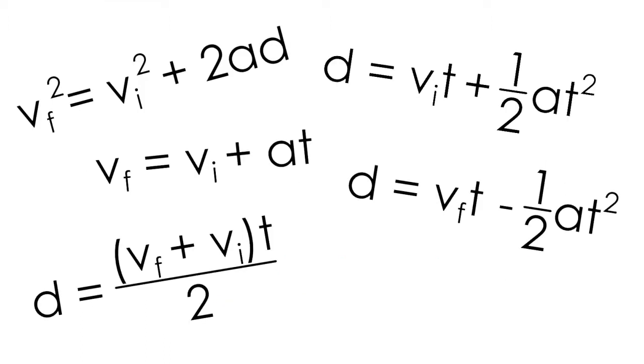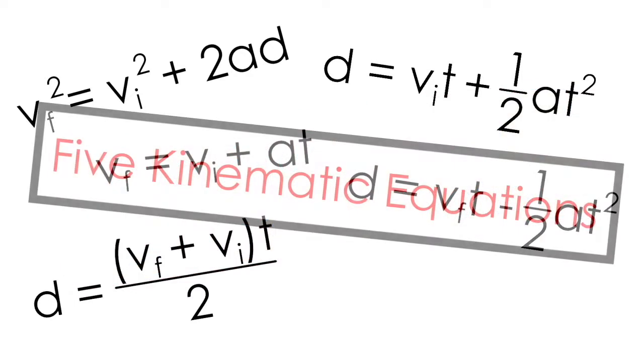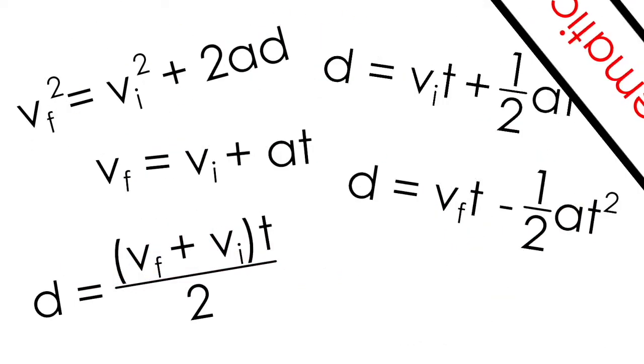These intimidating and similar-looking formulas are often called the five equations of accelerated motion, or more simply, the five kinematic equations. They're used to solve real-world problems where acceleration is constant.